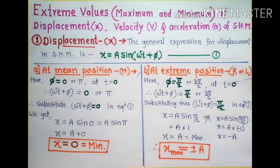sin(π/2) = 1, therefore x = A × 1 = A. And sin(3π/2) = −1, therefore x = −A. Thus x = ±A, and this A is the maximum value of displacement — the distance between mean and extreme position. Therefore x_max = ±A, where plus A denotes the right side and minus A denotes the left side.